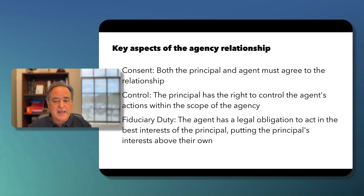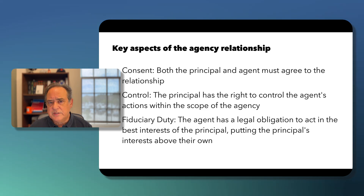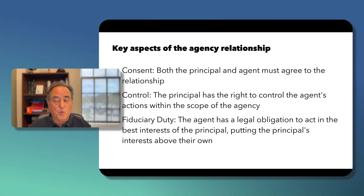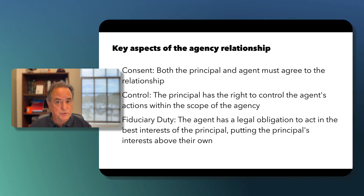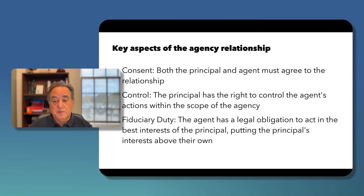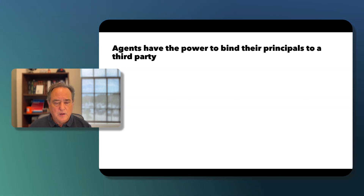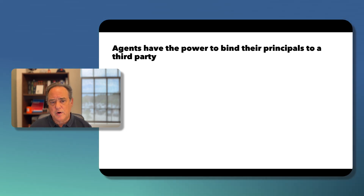Fiduciary duty means the agent has a legal obligation to act in the best interest of the principal. We'll also see this fiduciary duty relevant to corporate officers and boards of directors, in which directors or officers owe an obligation to the company that is greater than the obligation they owe to themselves. This is what makes the agency relationship so important.